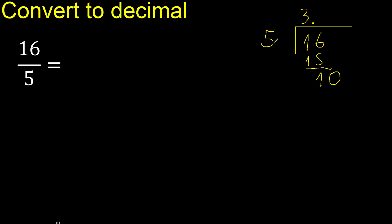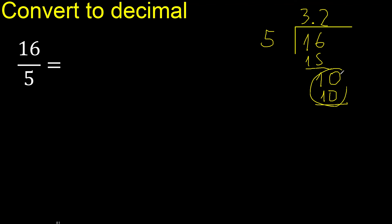Bring down: 10. Divide by 5. Multiply by which number? Multiply by 3 is 15 — 15 is greater. Multiply by 2 is exactly 10, which is not greater. So the digit is 2. Subtract: 0. Remainder is 0, therefore finish.